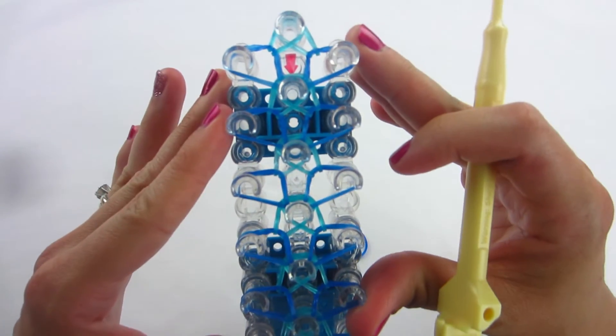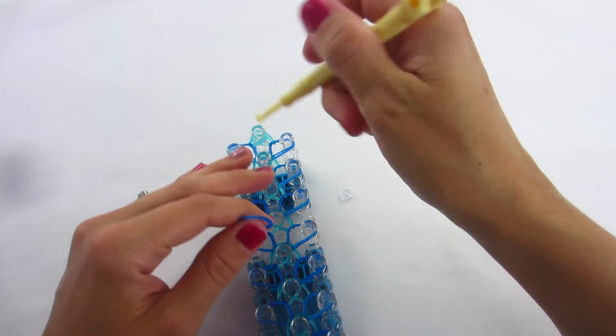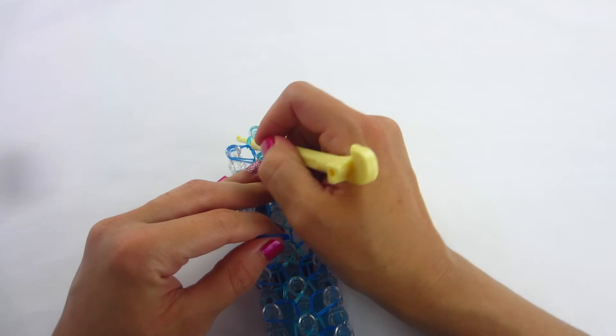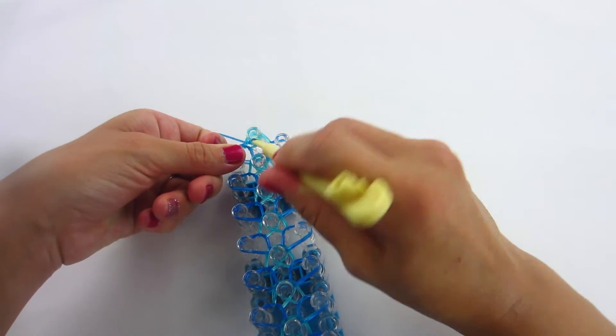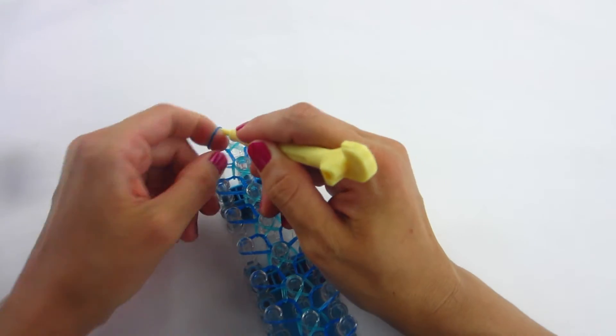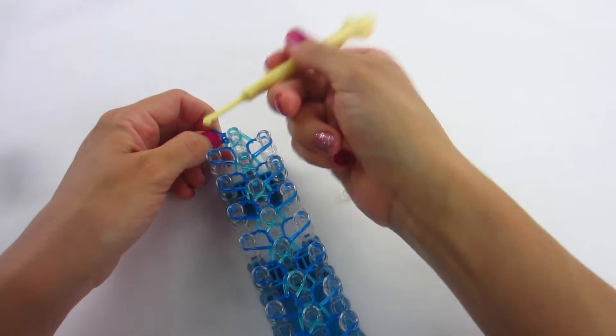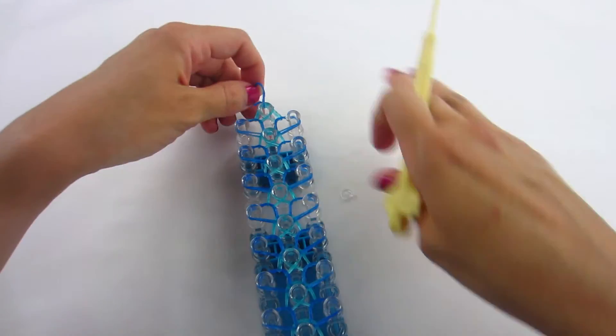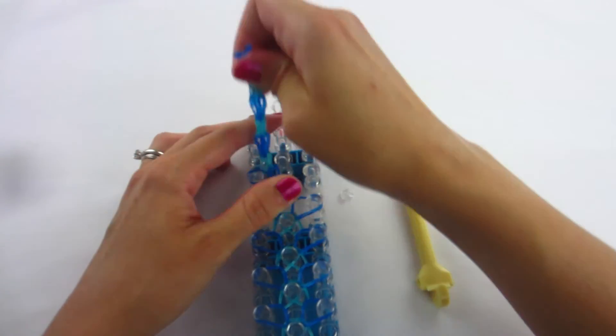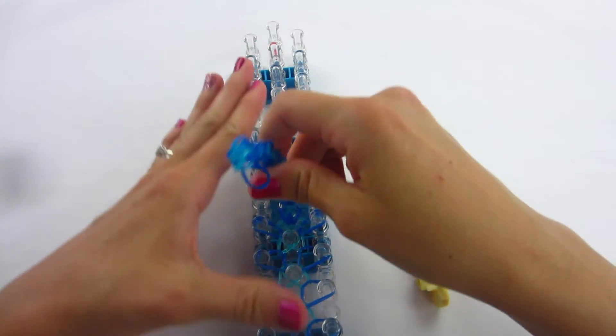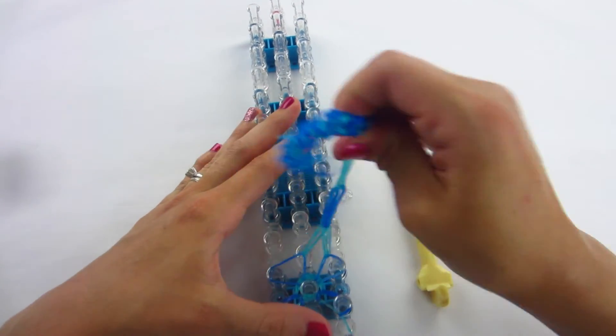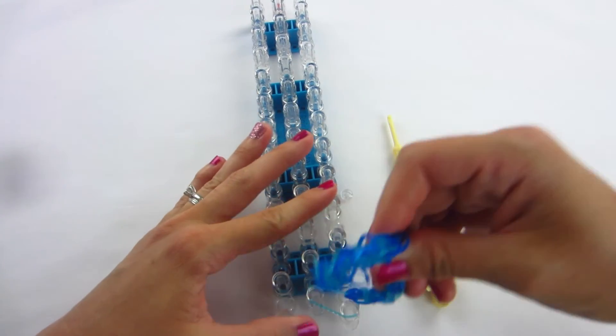Now that you have your whole entire loom looped like this, we are going to take that last blue finishing band. You're going to make a slip knot, so stick your hook all the way down the middle of that last peg, hook our blue band, make sure you have a good hold on it, make a slip knot at the end, and then you are ready to pull off your bracelet. Now we just have to add our c-clip and we are done.